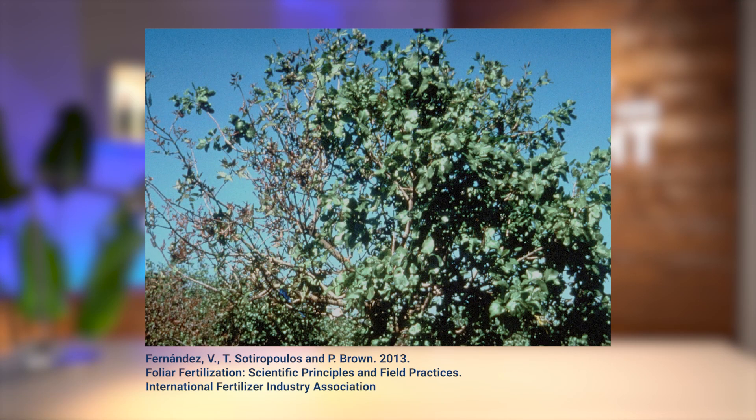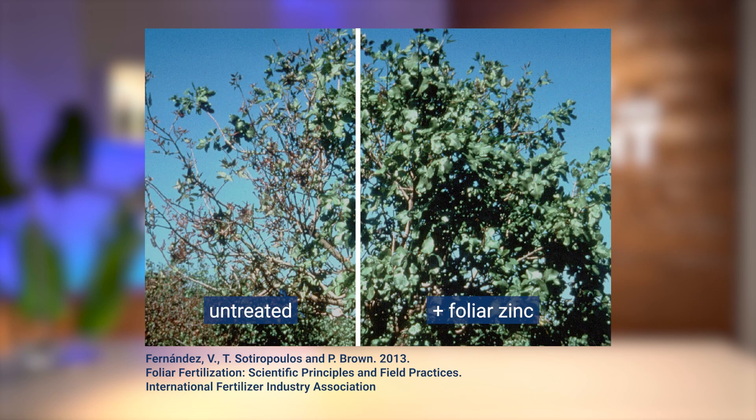We can see what effects foliar fertilization can have with low nutrient mobility using the example of a pistachio tree. In the pistachio, zinc is highly immobile, so the plant will suffer from zinc deficiency if not enough zinc can be taken up through the soil. But if you apply a zinc foliar fertilizer to only a part of the plant, that part will grow healthy, as we can see in the picture. Only the right part of the pistachio tree received a foliar application of zinc and only this part is healthy. Since zinc cannot be transported within the plant, the left side of the tree is stunted and we can expect large yield losses. This example illustrates the effect of low phloem mobility and that foliar fertilization can make a huge difference in the nutritional status.